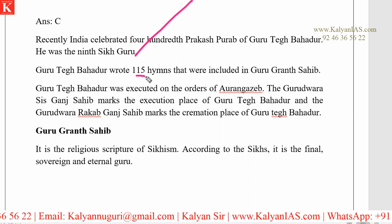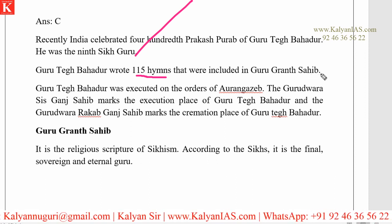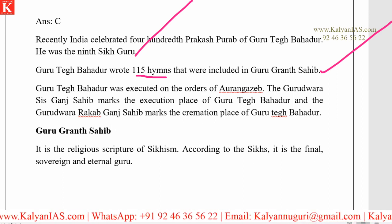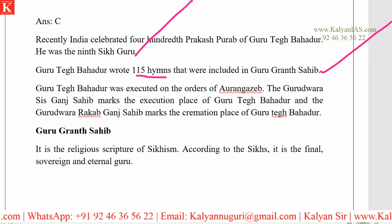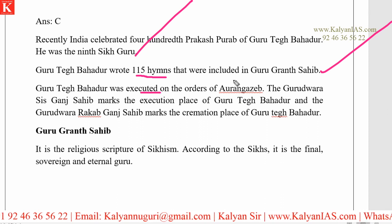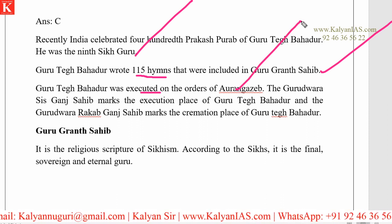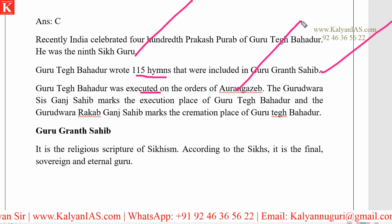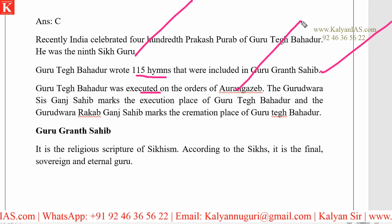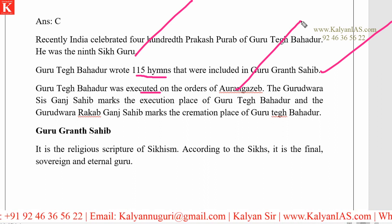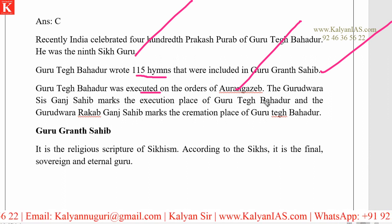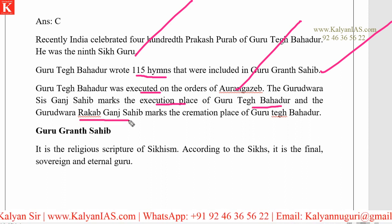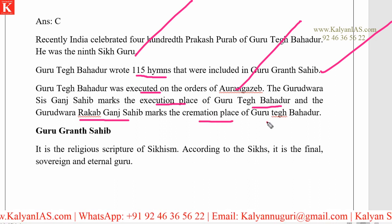Guru Tej Bahadur wrote 115 hymns that were included in the Guru Granth Sahib. Guru Granth Sahib is the holy book for the people who follow Sikhism. Guru Tej Bahadur was executed on the orders of Aurangzeb — these types of questions are asked in examinations, such as who was executed by Aurangzeb. The Gurudwara Sis Ganj Sahib marks the execution place, and Gurudwara Rakab Ganj Sahib marks the cremation place of Guru Tej Bahadur.